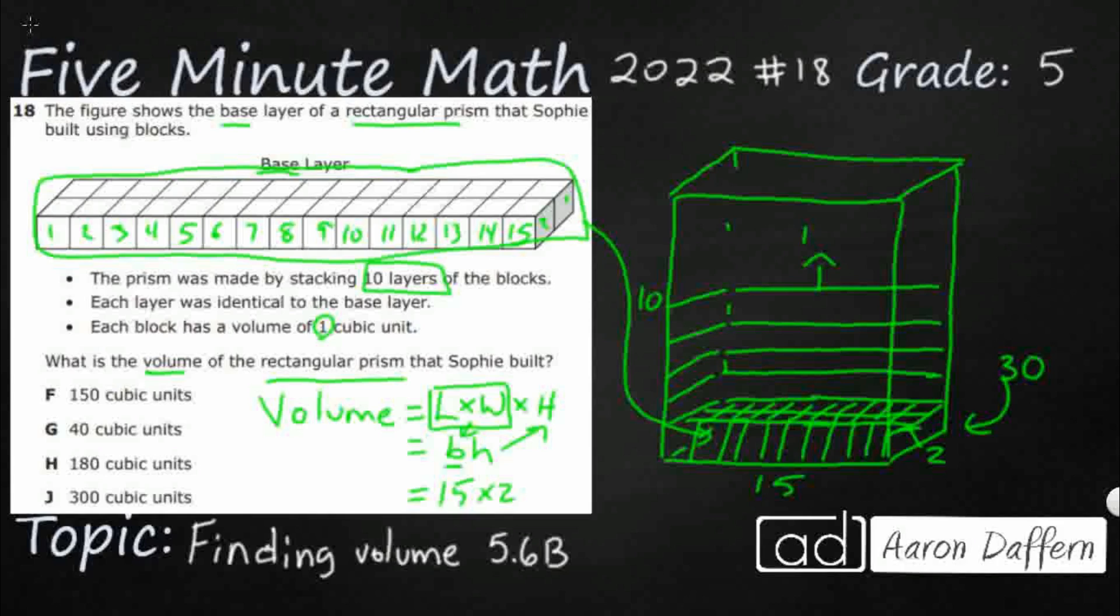I'm just going to go up here and just say 10 times. So I'm going to have to multiply that 30 by the 10, right? So I've got my 15 times 2, that makes 30. And I've got 10 stacks of 30 or 10 layers of 30.